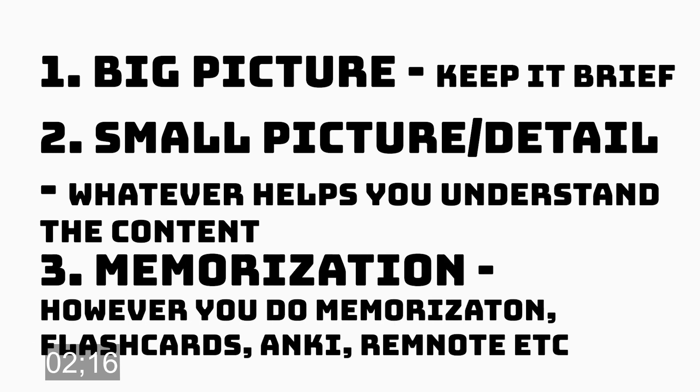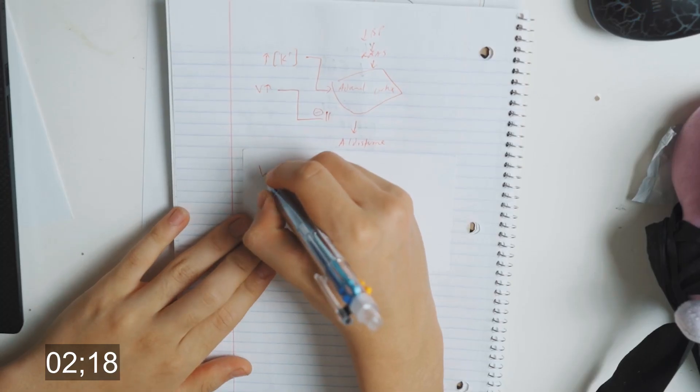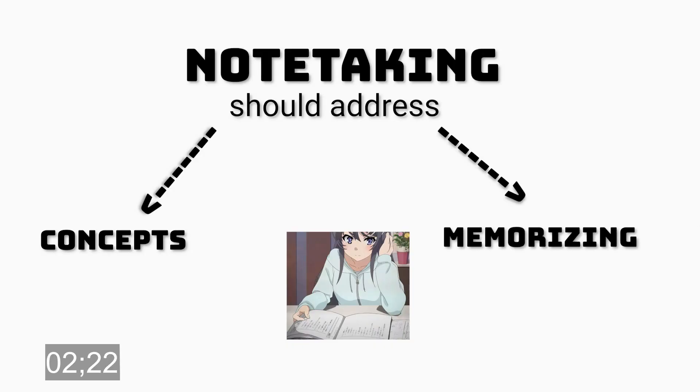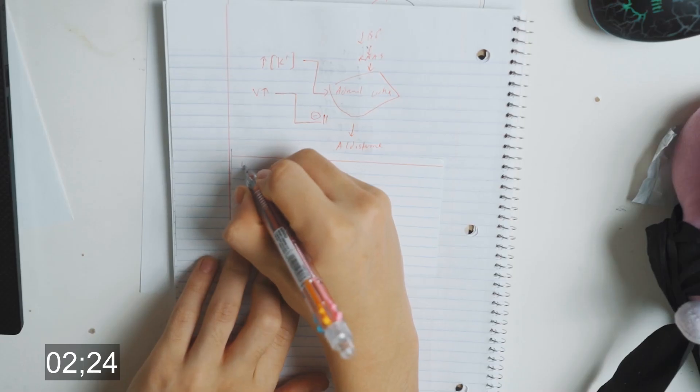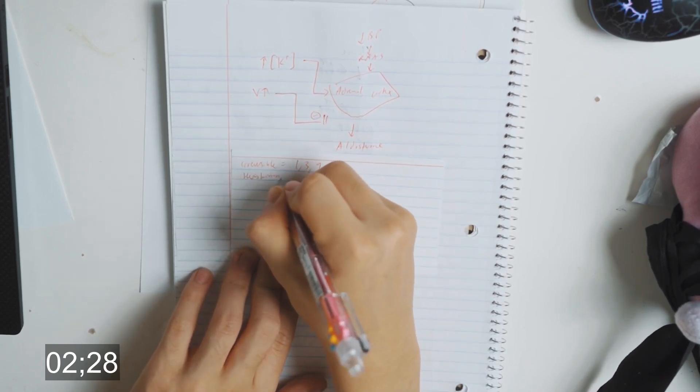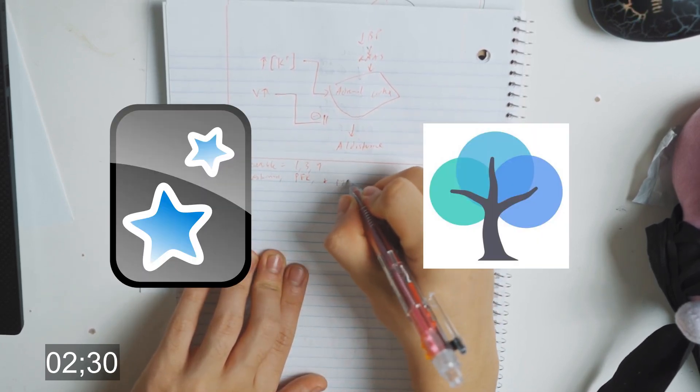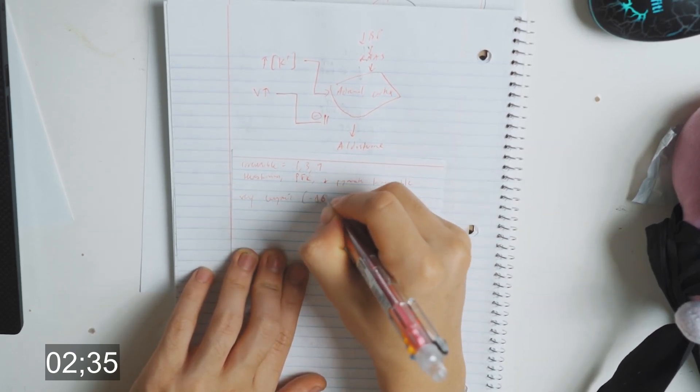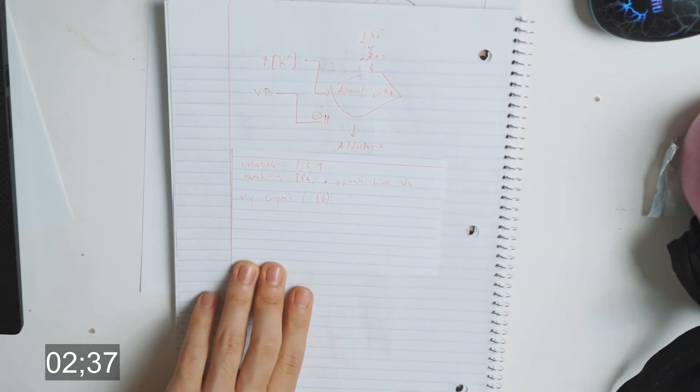Finally, you have the M, or Memorization section. As you're working on the Detail/Small Picture section, a big part of learning also involves memorizing. Any pathways or lists or things you deem you might have to memorize, either write it down on a flashcard or use Anki or RemNote or whatever you use for spaced repetition. That way you have notes on the conceptual side of things, but also something to help you memorize.